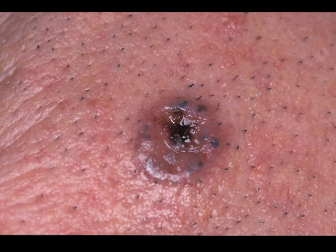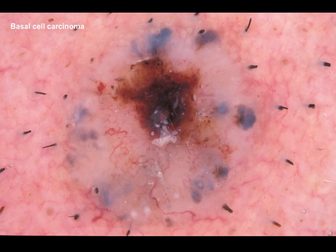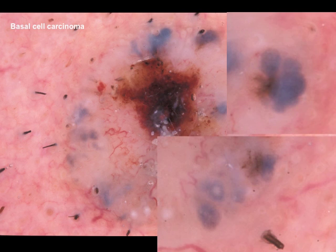Picture of a pigmented basal cell carcinoma clinically. Dermoscopically, we see central ulceration, arborizing telangiectasia, but at the periphery these large leaf-like areas, blue in color, sharply demarcated, corresponding to pigmented tumor nests.